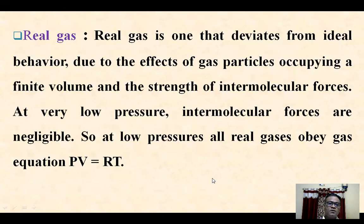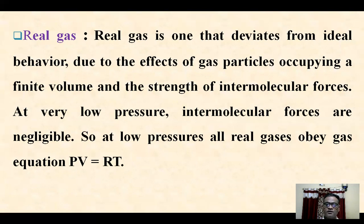So what is a real gas? A real gas is one that deviates from ideal behavior due to the effects of gas particles having finite volume and the presence of intermolecular forces. At very low pressures, intermolecular forces are negligible, so at low pressures all real gases obey the gas equation PV = RT.